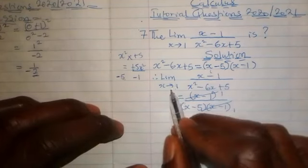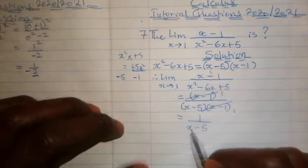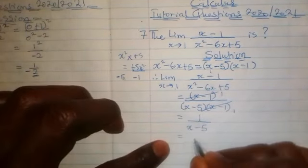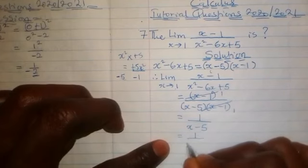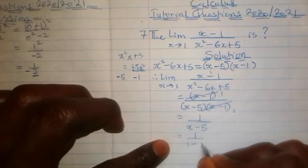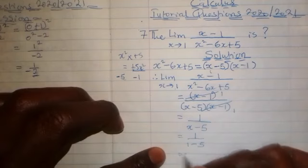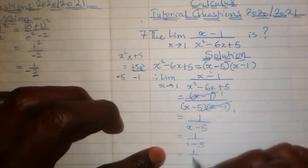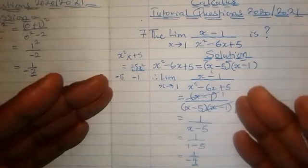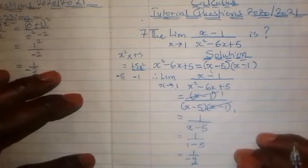Now at this point, we are going to substitute the value for x, which is 1, into this place here. So which means we are going to have 1 divided by (1-5). And if we simplify this, we are going to have 1 upon -4 as the answer to this question.